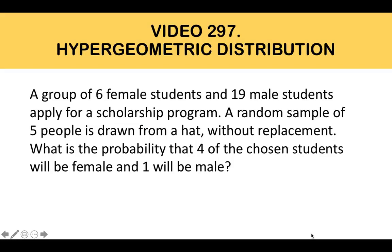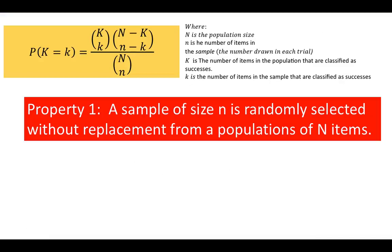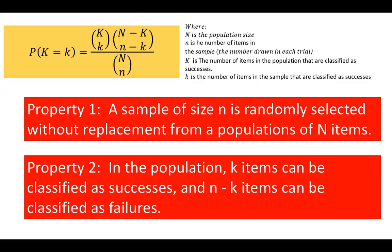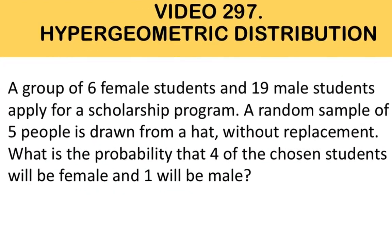This problem will illustrate the characteristics of a hypergeometric experiment. A hypergeometric experiment is a statistical experiment that has the following properties. Number one, the sample of size n is randomly selected without replacement from a population of N items. Number two, in the population, k items can be classified as successes, and N minus k items can be classified as failures.